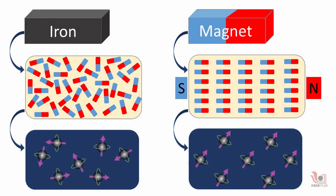A magnetic material like iron doesn't behave like a magnet because the domains don't have a preferred direction of alignment. On the other hand, the domains of a magnet are all aligned in a specific direction.